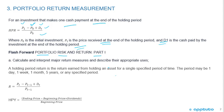A holding period return is the return expected from holding an asset for a single period of time. The period may be one day, one week, one month, five years, or any specified period. So this is not an annual return — it's a holding period return, and the time period may be different.